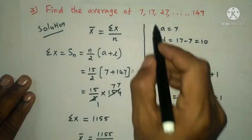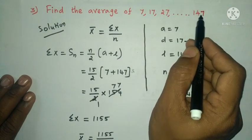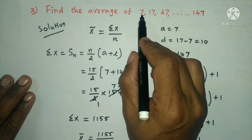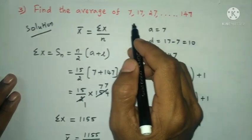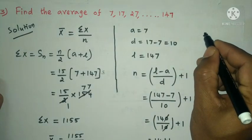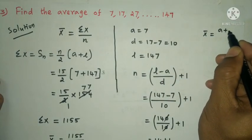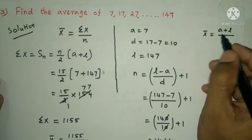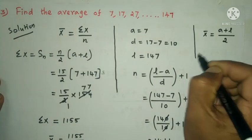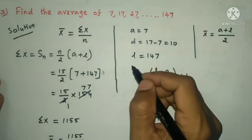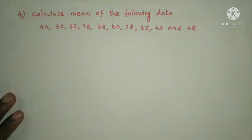Shortcut: for an AP series, the average = (first term + last term) / 2 = (a + l) / 2. Substitute to get the answer directly. This is the shortcut for the next question.